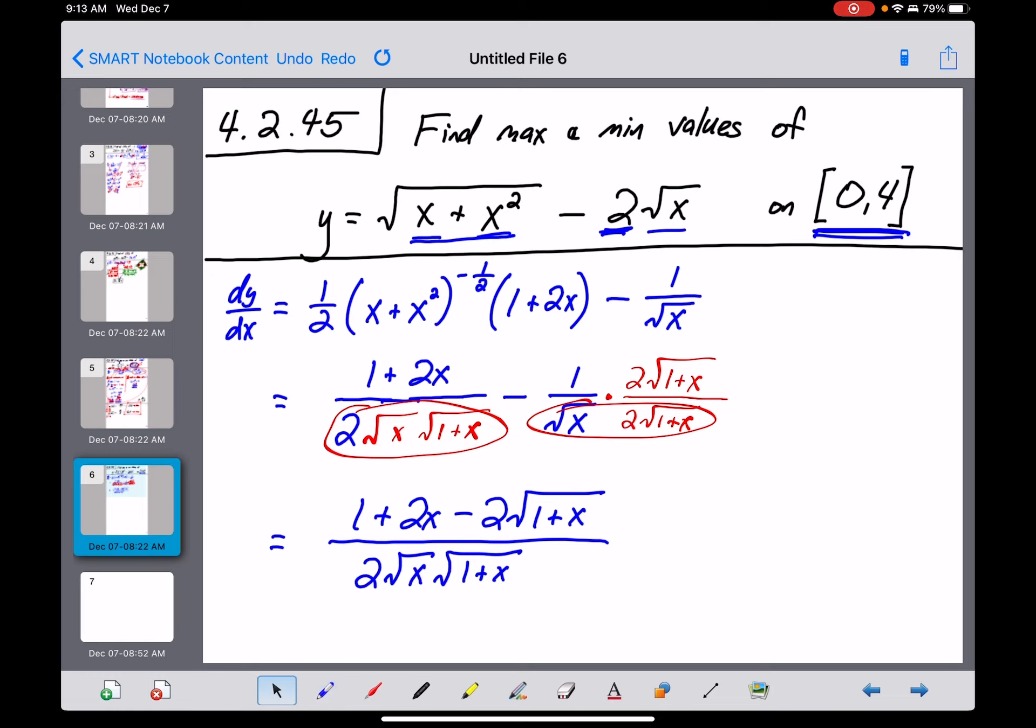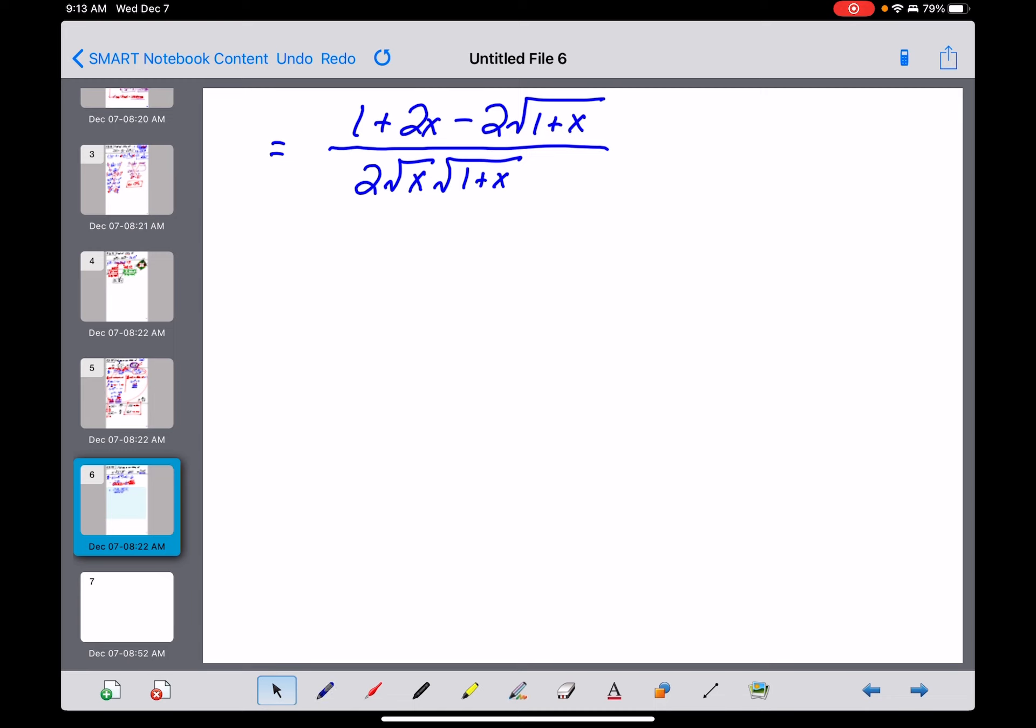Now, what do we do from here? Critical points come from where your derivative is either zero or undefined. So, as I talked about on the previous video I just made, I'm going to kind of cut this problem in half right now. The derivative equaling zero, y prime equals zero, is when the numerator of your denominator, one plus two x minus two times the square root of one plus x is equal to zero.